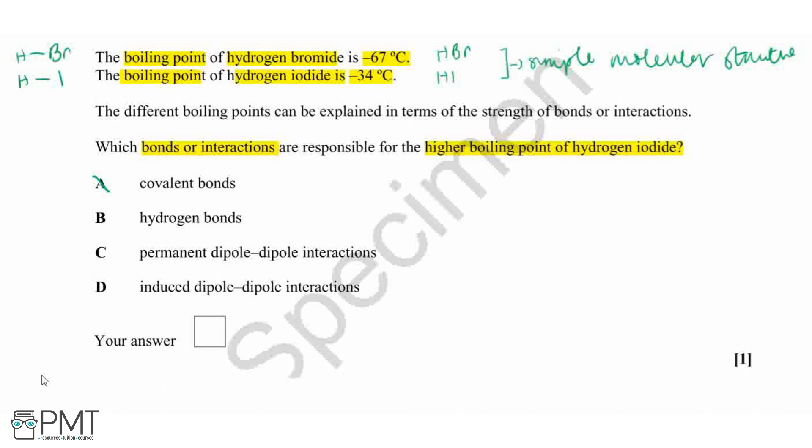Neither the bromine nor the iodine is electronegative enough to form hydrogen bonds. Therefore, we can eliminate option B.